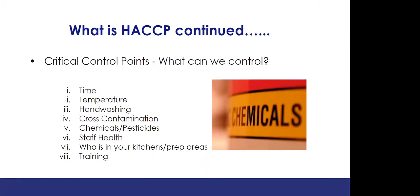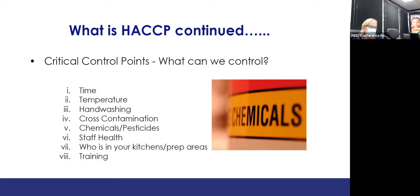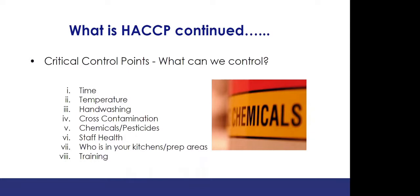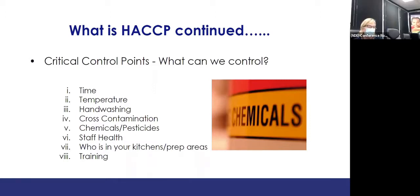Hand washing — we can control how well our employees wash their hands and how frequently through good training. Cross contamination — we can control it by having employees change their gloves and wash their area and all utensils and cutting boards when they move to another item. We would never want anyone going from raw meat or poultry to fresh fruits or vegetables. That has happened and caused foodborne illnesses — thank goodness not in our state.